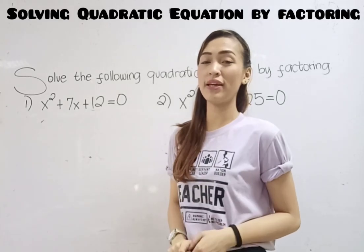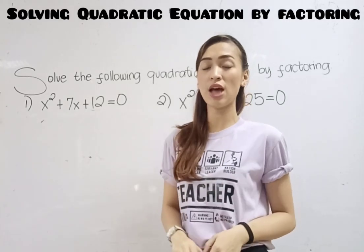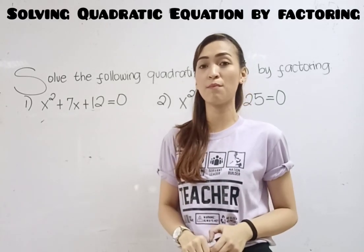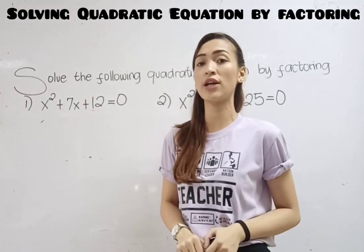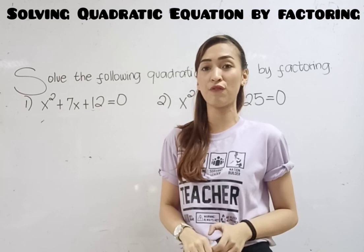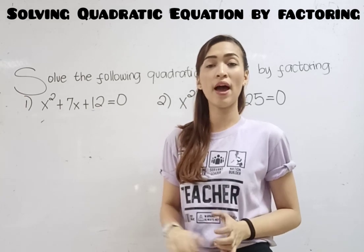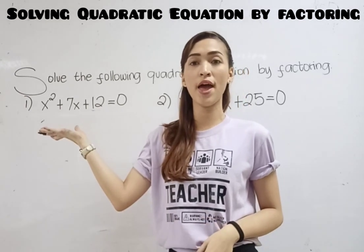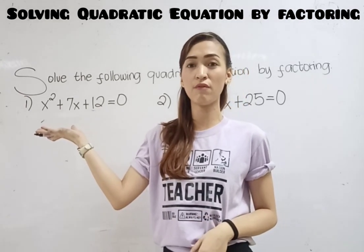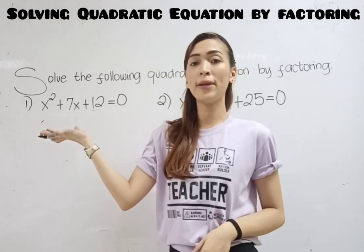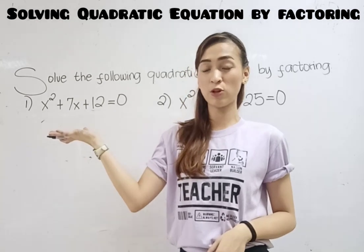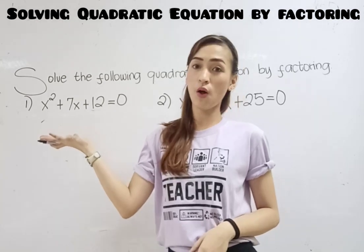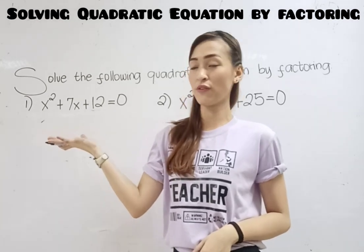Hi! Welcome to my class. Our topic for today is about solving quadratic equations by factoring. So I have here number 1: x squared plus 7x plus 12 equals 0. Solve it by factoring.